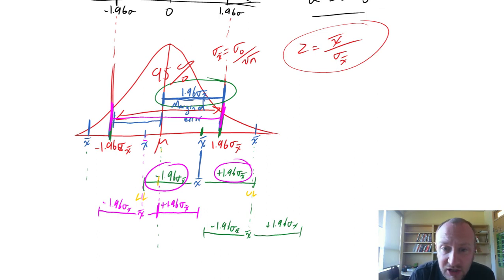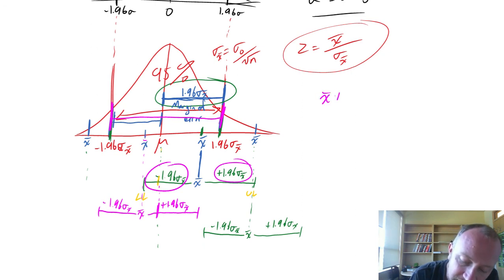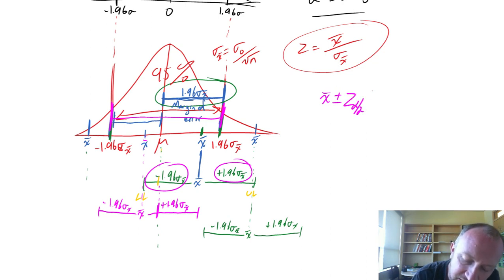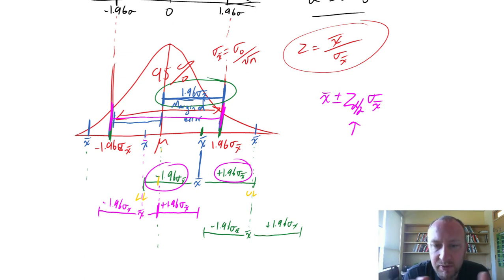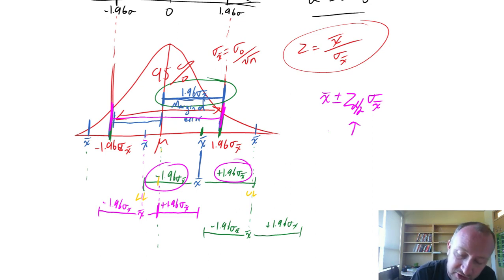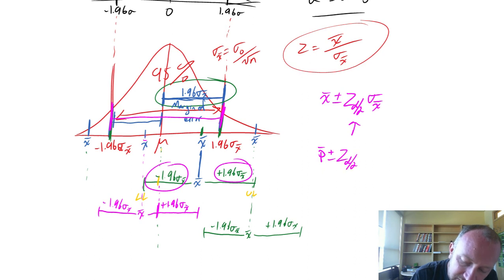In this module, we're going to go through a bunch of different calculations using the formula x-bar plus or minus a margin of error, with the general notation being Z alpha divided by 2 times the standard error, where alpha divided by 2 is determined by the level of confidence we want. We'll also look at confidence intervals for sample proportions, which will be very similar but using the sample proportion as our point estimate rather than a sample mean.